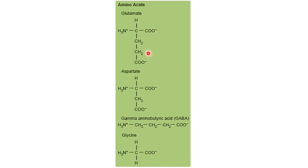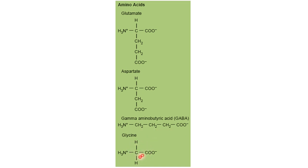These are the structures of amino acids which act as neurotransmitters. This one is glutamate (glutamic acid) — it loses a hydrogen so the COOH group becomes COO⁻. This one is aspartate, this one is GABA, and this one is the simple amino acid glycine.